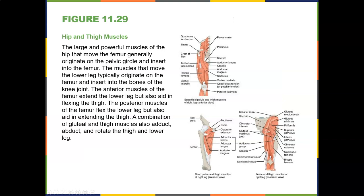The hip and thigh muscles are large and powerful. The muscles of the hip that move the femur generally originate on the pelvic girdle and insert into the femur. The muscles that move the lower leg typically originate on the femur and insert into the bones of the knee joint.